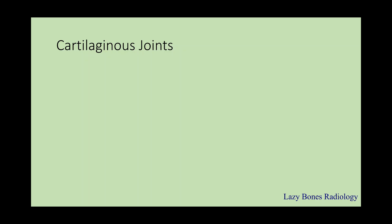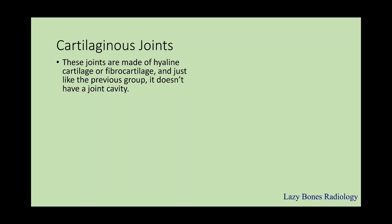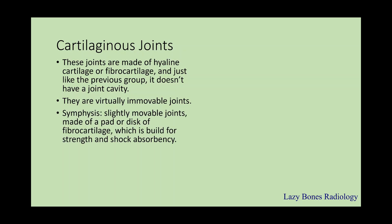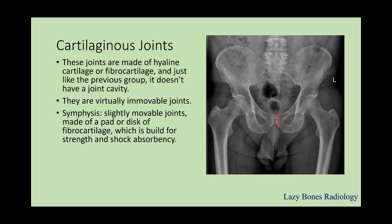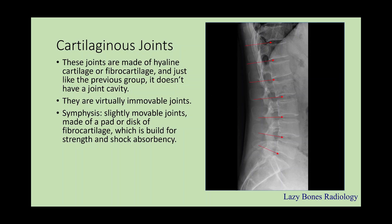Next are the cartilaginous joints. These joints are made of hyaline cartilage or fibrous cartilage and, like the previous group, do not have a joint cavity — they are virtually immovable. The first is the symphysis, which is a slightly movable joint made of a pad or disc of fibrocartilage built for strength and shock absorption. As you can see here, this is the pubic symphysis and these are the intervertebral discs, made for shock absorption.